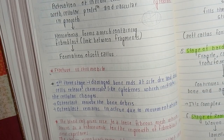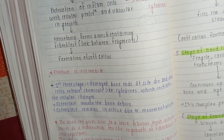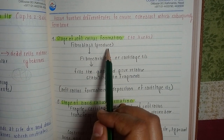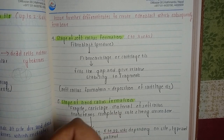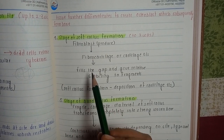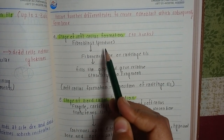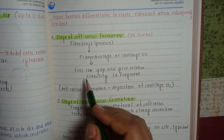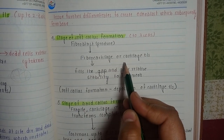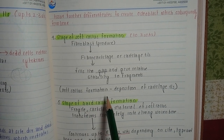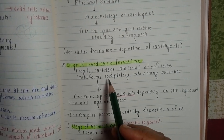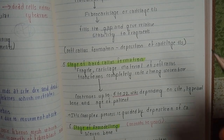The next stage is soft callus formation, occurring up to three weeks. The fibroblasts previously produced after hematoma formation now produce fibrocartilage or cartilage tissue, which fills the gap at the fracture site and provides relative stability. This deposition of cartilage tissue is called soft callus formation.